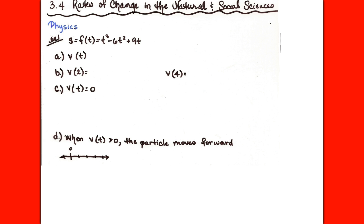They tell us on page 159: if s = f(t) is the position function of a particle moving in a straight line, then Δs/Δt represents the average velocity over a time period Δt. Velocity is the rate of change of displacement with respect to time — the instantaneous velocity at a particular instant. That was the discussion from sections 2.6 and 3.1, where we dropped a ball from the top of the CN Tower and found that instantaneous rate of change equals instantaneous velocity equals the derivative.